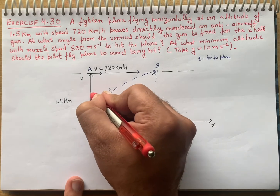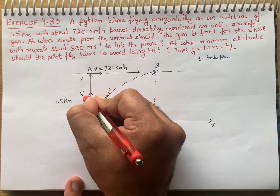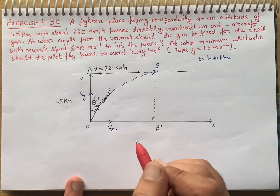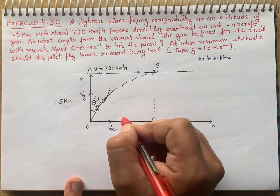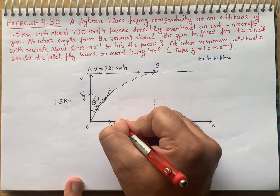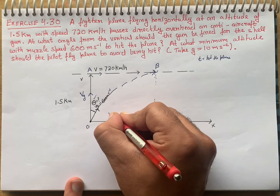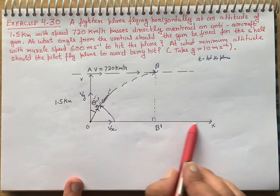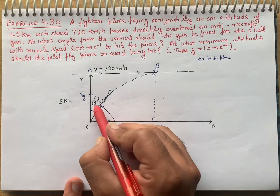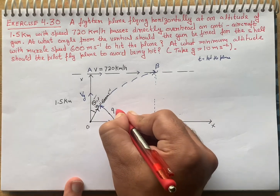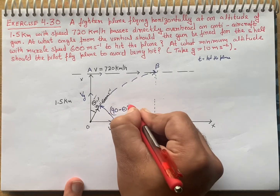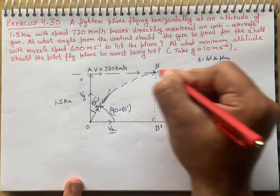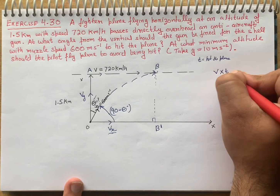Now let's find the velocity component in y direction and velocity component in x direction. Let's start to find theta. The basic definition of angle is that the angle is always with the positive x-axis, and it should be anti-clockwise. If it is anti-clockwise, only then we take it as positive.